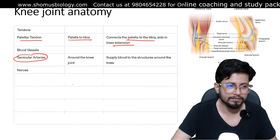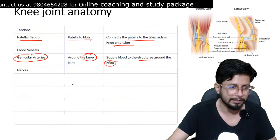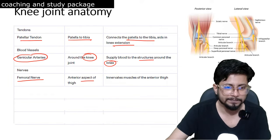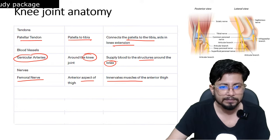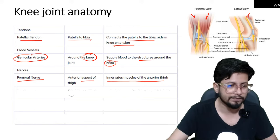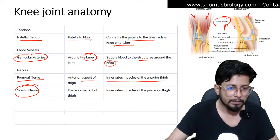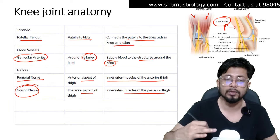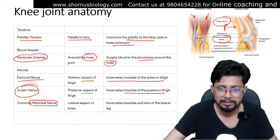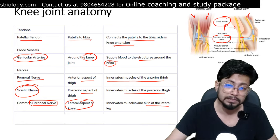For blood supply, the genicular arteries supply blood to the structures around the knee joint. For nerves: the femoral nerve is on the anterior aspect of the thigh and innervates the muscles of the anterior thigh. The sciatic nerve is on the posterior aspect of the thigh and innervates the muscles of the posterior thigh. The common peroneal nerve is on the lateral aspect of the knee and innervates muscles and skin of the lateral leg.